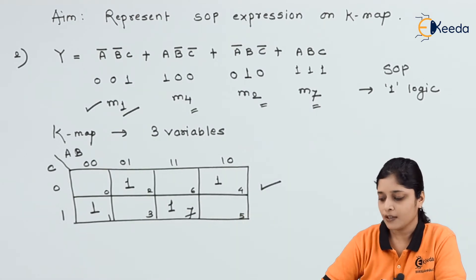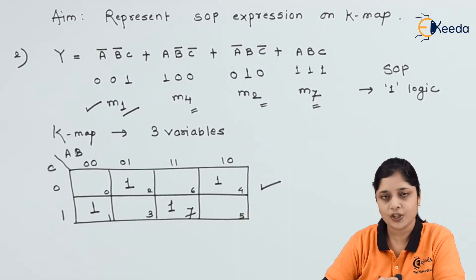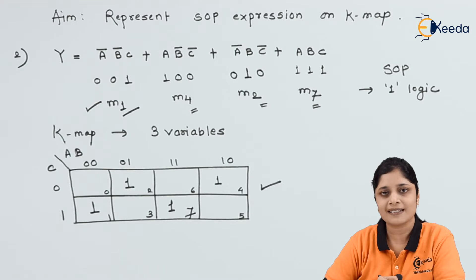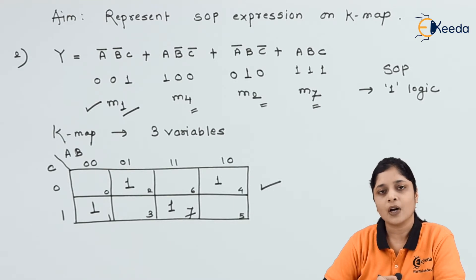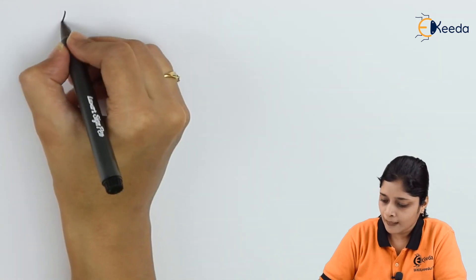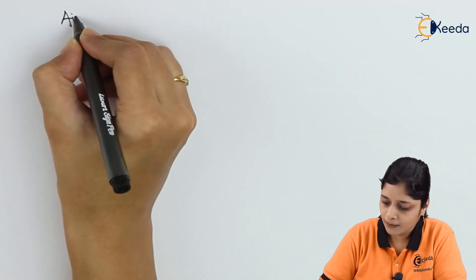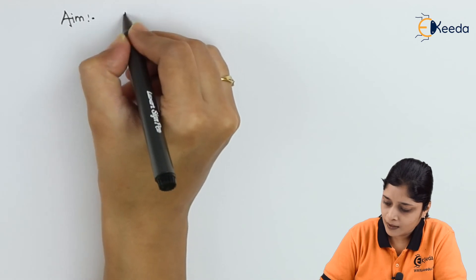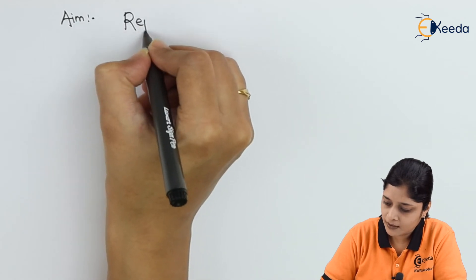In this way you have to mention all the logic values inside the boxes on the Kmap. Now we will see the next example.